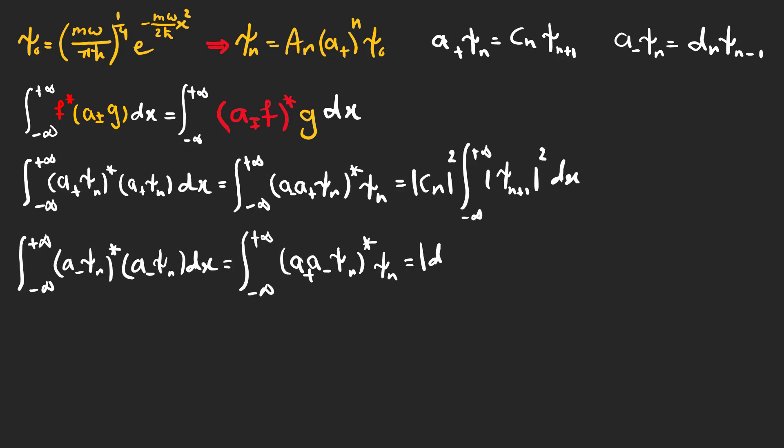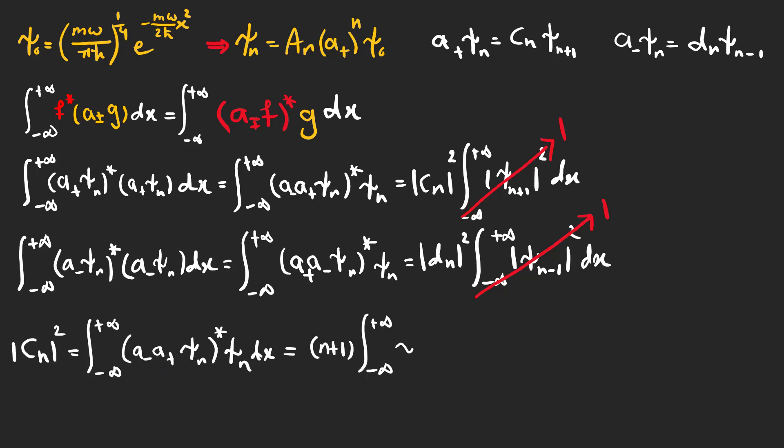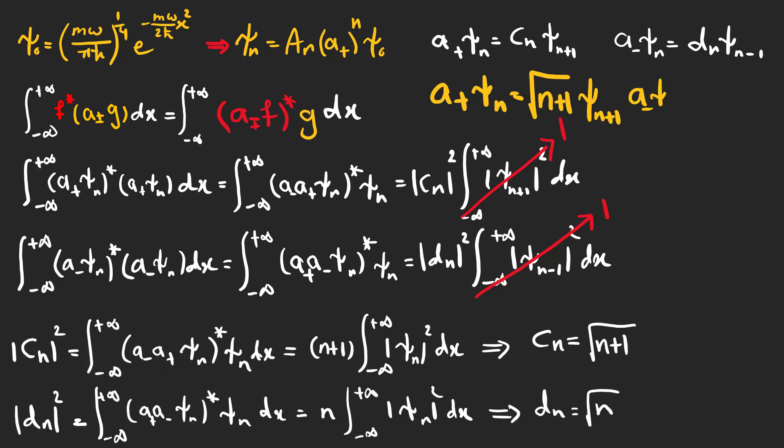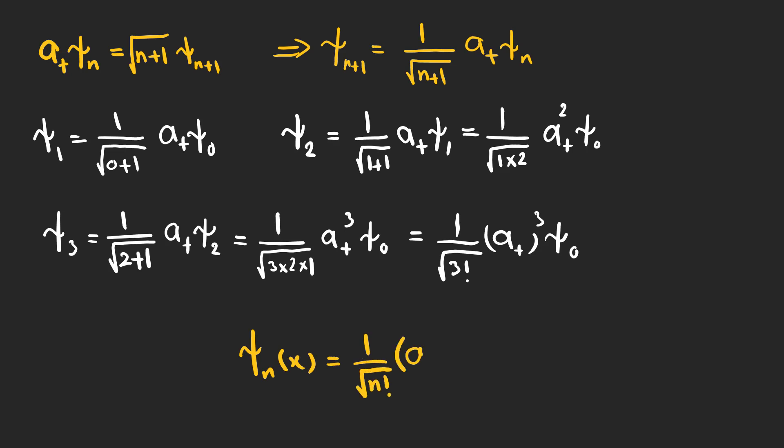To find cn and dn, we can write these integrals. As psi n plus 1 and psi n minus 1 are normalized, these two integrals yield 1. And by finding a minus a plus psi n and a plus a minus psi n, now we can calculate cn and dn. And by using this equation, we can now find a general formula for excited states.